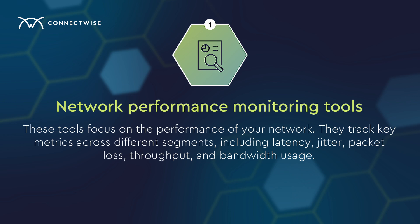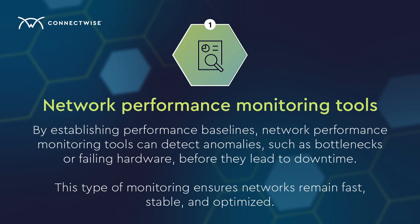These tools focus on the performance of your network. They track key metrics across different segments including latency, jitter, packet loss, throughput, and bandwidth usage. By establishing performance baselines, network performance monitoring tools can detect anomalies such as bottlenecks or failing hardware before they lead to downtime. This type of monitoring ensures networks remain fast, stable, and optimized.